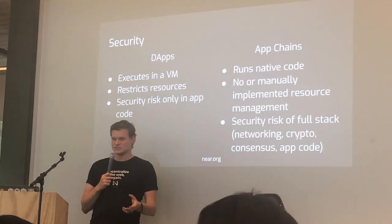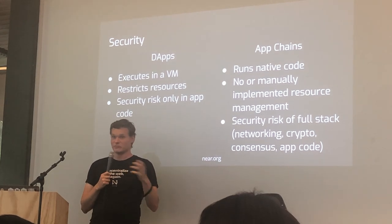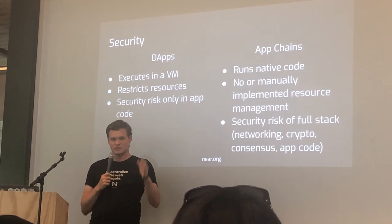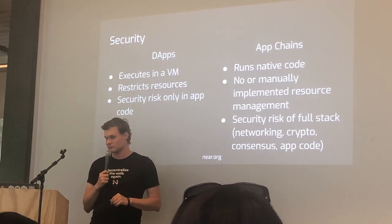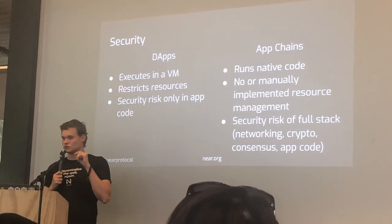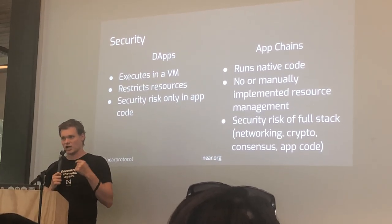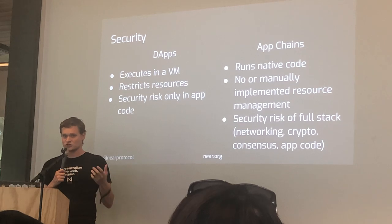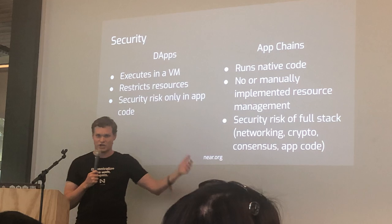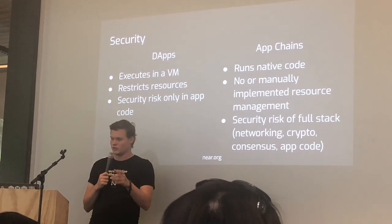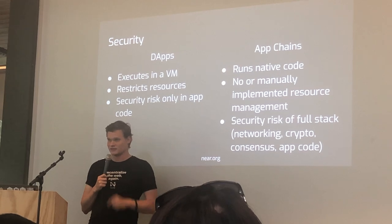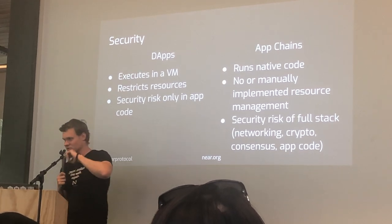On top of this, because it's a VM, we have metering — we have gas, which measures how much usage an application has and cuts it off as soon as it runs out. When you're writing an app chain, you don't have that. So you either need to add it manually, counting usage yourself, or you can have transactions that take gigabytes of RAM on your node and crash your validators. And if you have a consensus that slashes for going offline, this is the greatest way to get a bunch of people slashed in one go.